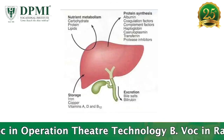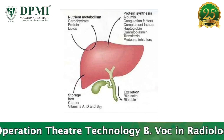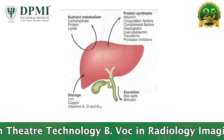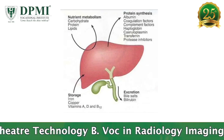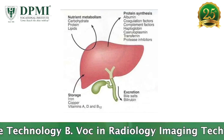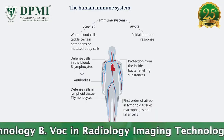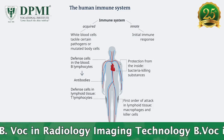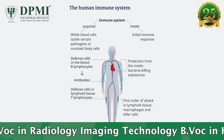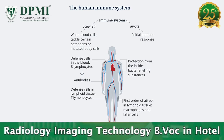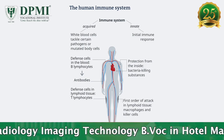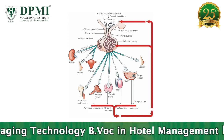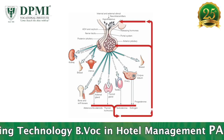Most of the plasma proteins, except immunoglobulins and protein hormones, are synthesized in the liver. Gamma globulins, or antibodies, are formed in the plasma cells and lymphoid tissue. Protein hormones are synthesized by the endocrine glands.